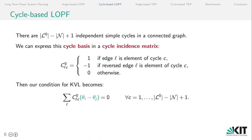In fact, we know that there are L minus N plus 1 independent simple cycles in a connected graph. It is possible to express this cycle basis in a cycle incidence matrix. The concept is very similar to the incidence matrix. It's a matrix with dimensions for all the lines and all the independent cycles. And it has elements 1 if the edge l is element of cycle c or minus 1 if the reversed edge l is element of cycle c.